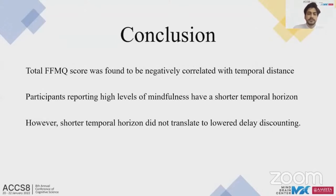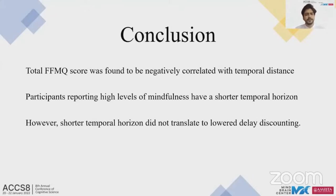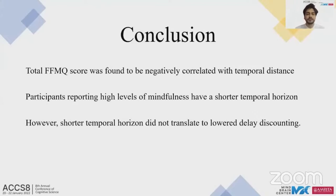The significant negative correlation between total FFMQ score and temporal distance parameter a shows that the future appears subjectively closer with an increase in trait mindfulness. Trait mindfulness and mindfulness practice have been observed to influence time perception in the order of seconds and minutes — subjective time is expanded for those high in trait mindfulness. This study contributes to the time perception literature by showing how trait mindfulness influences time perception in the order of days.